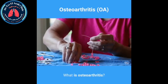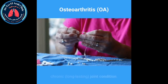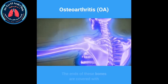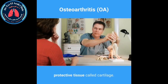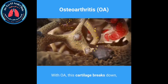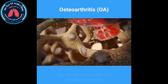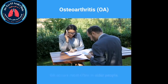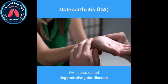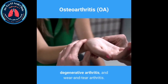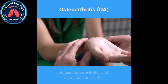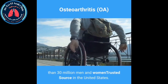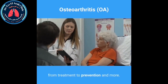What is osteoarthritis? Osteoarthritis (OA) is the most common chronic, long-lasting joint condition. A joint is where two bones come together. The ends of these bones are covered with protective tissue called cartilage. With OA, this cartilage breaks down, causing the bones within the joint to rub together. This can cause pain, stiffness, and other symptoms. OA occurs most often in older people, although it can occur in adults of any age. OA is also called degenerative joint disease, degenerative arthritis, and wear-and-tear arthritis — a leading cause of disability affecting more than 30 million men and women in the United States.